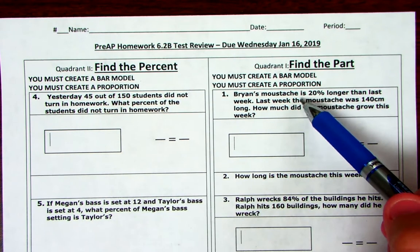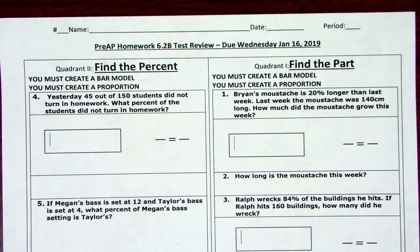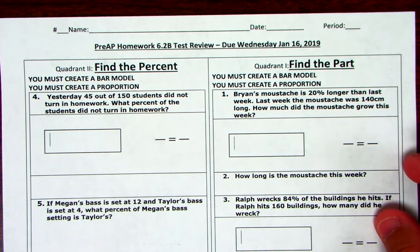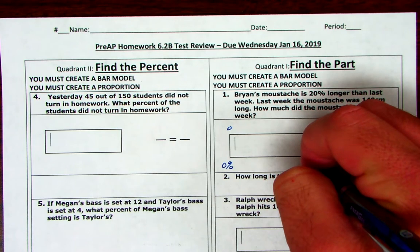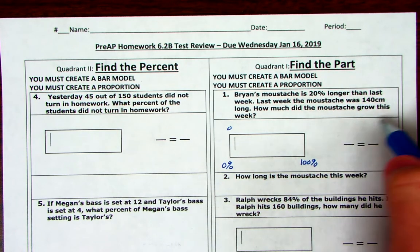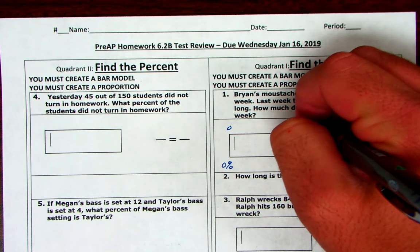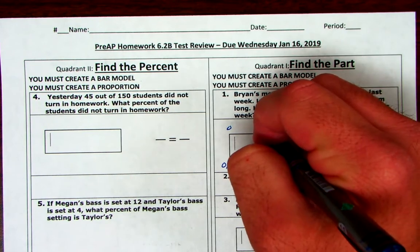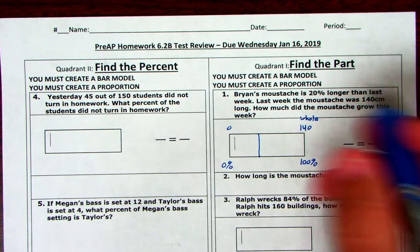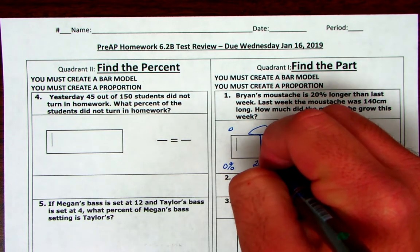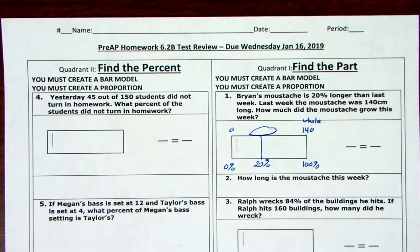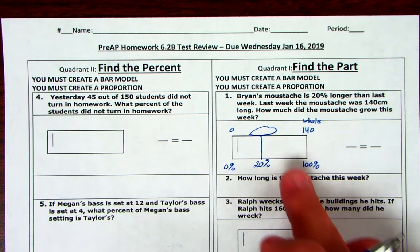So I'm going to start here in quadrant one. Brian's mustache is 20% longer than last week. Last week, the mustache was 140 centimeters long. How much did the mustache grow this week? So we're solving for the part. So I'm going to set up my percent bar. So last week, the length was 140 centimeters. That's the whole. That's how long it was. Now I said earlier, it gives me the part. I actually lied there. We're solving for the parts. I'm sorry. We're solving for the part. It gives me the percent right there.